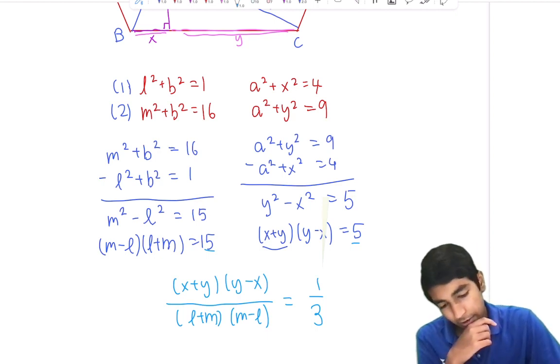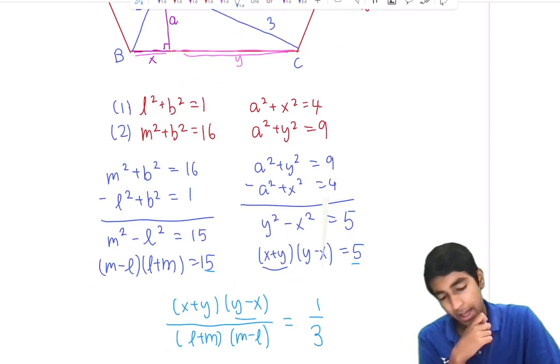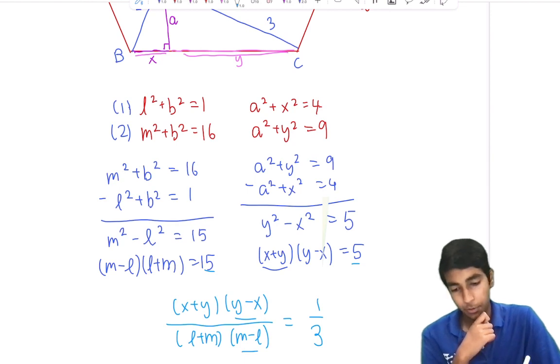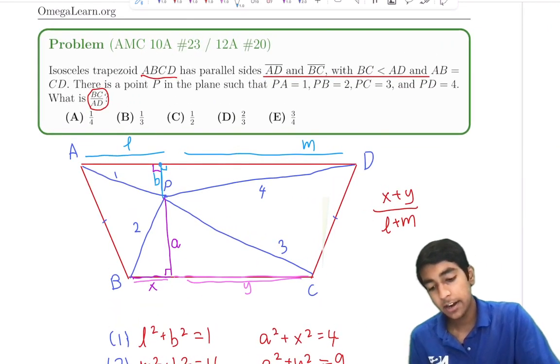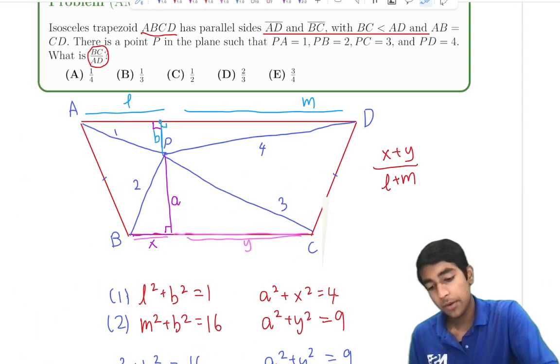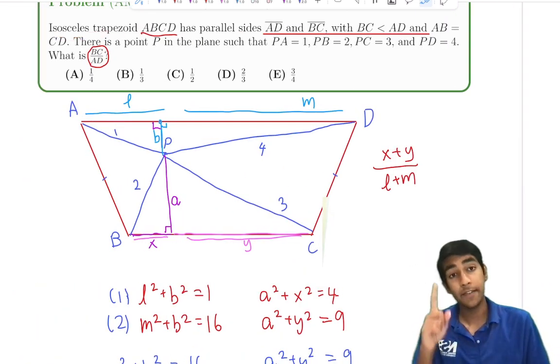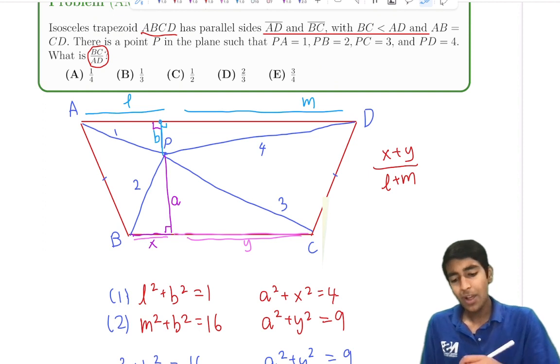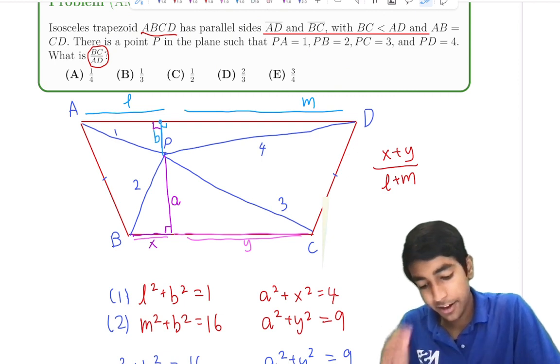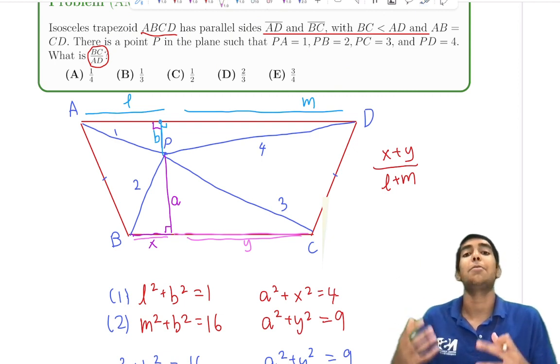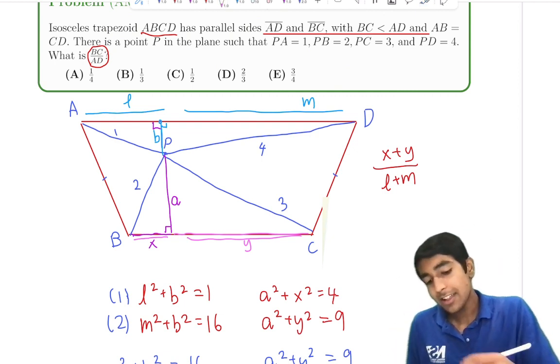But we've got this extra term here, Y minus X over M minus L. So now are we stuck? Do we just give up? Or is there something else we can do? The key thing is, when you're stuck, reread the problem for information you haven't yet used. In this case, we haven't used the fact that it's an isosceles trapezoid. That's something we probably should do, given that they literally give that information to us in the problem.